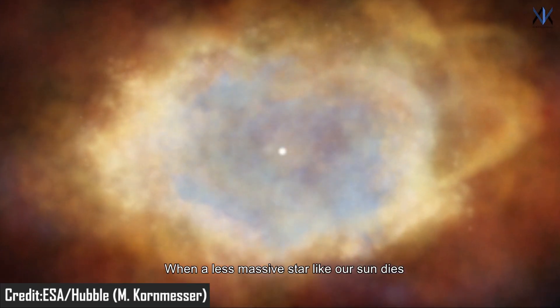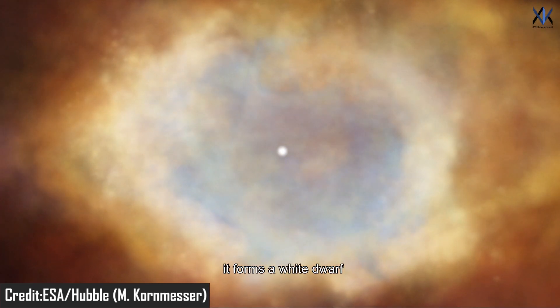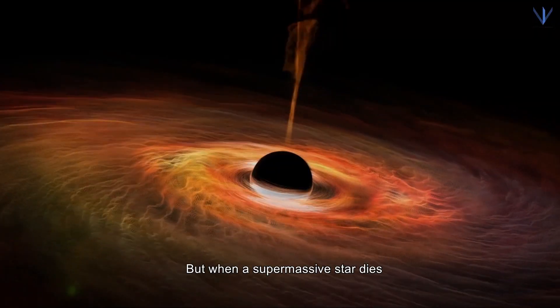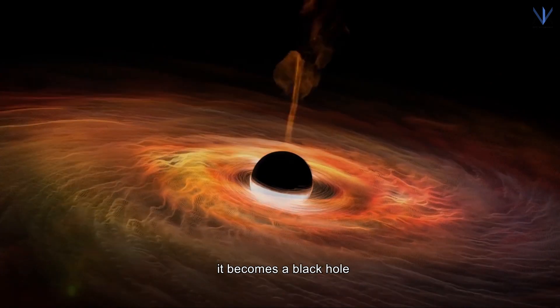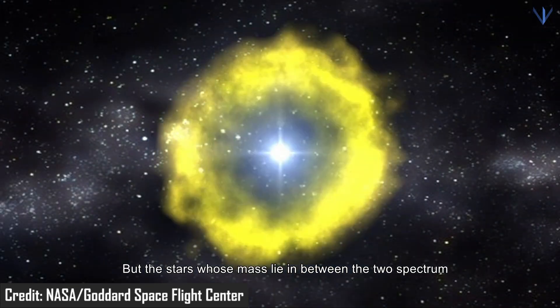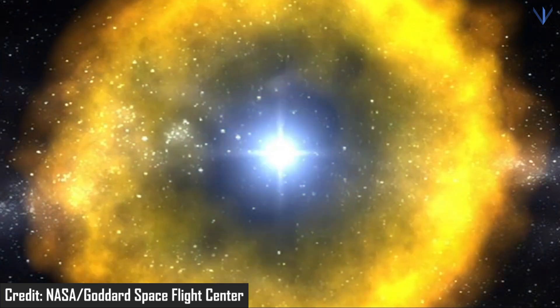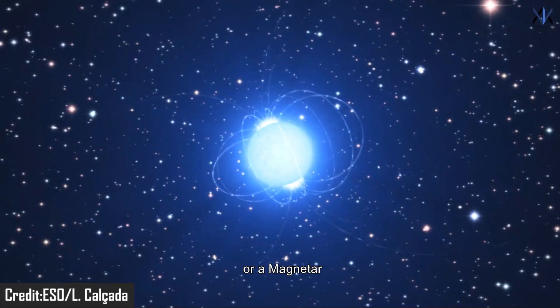When a less massive star like our Sun dies, it forms a white dwarf, but when a supermassive star dies, it becomes a black hole. Stars whose mass lies in between the two spectrums can become a pulsar or magnetar.